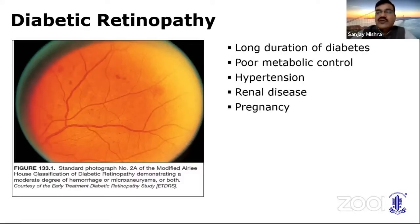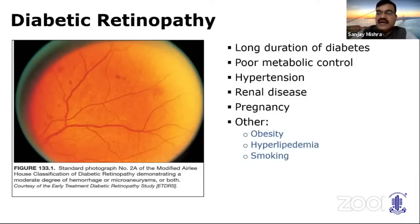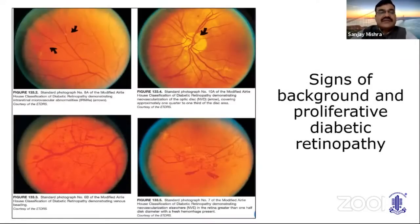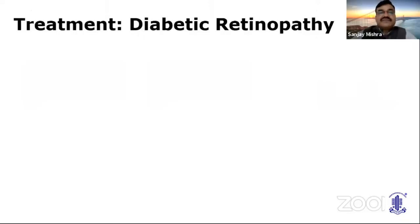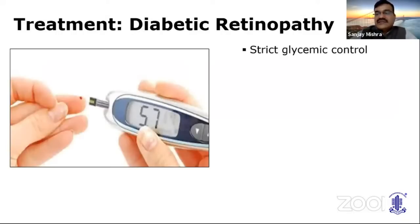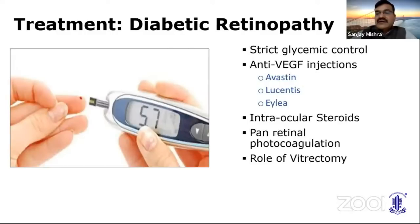Key risk factors for diabetic retinopathy include long duration of disease, poor metabolic control, hypertension, renal disease, and pregnancy. Other risk factors include obesity, hyperlipidemia, and smoking. Signs of background and proliferative diabetic retinopathy include NVDs, vascular proliferation on the disc, venous beading, and NVE. Treatment involves strict glycemic control, anti-VEGFs, intraocular steroids, PRP, and vitrectomy. PRP is mandated in PDR; vitrectomy is used for complications like non-resolving vitreous hemorrhage.